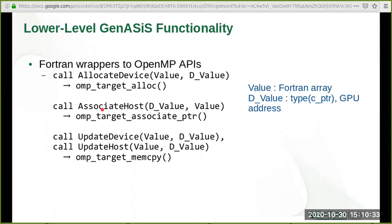For some of its API calls, OpenMP 4.5 only provides C interfaces, so we have created Fortran wrappers to these calls to use in Genesis.